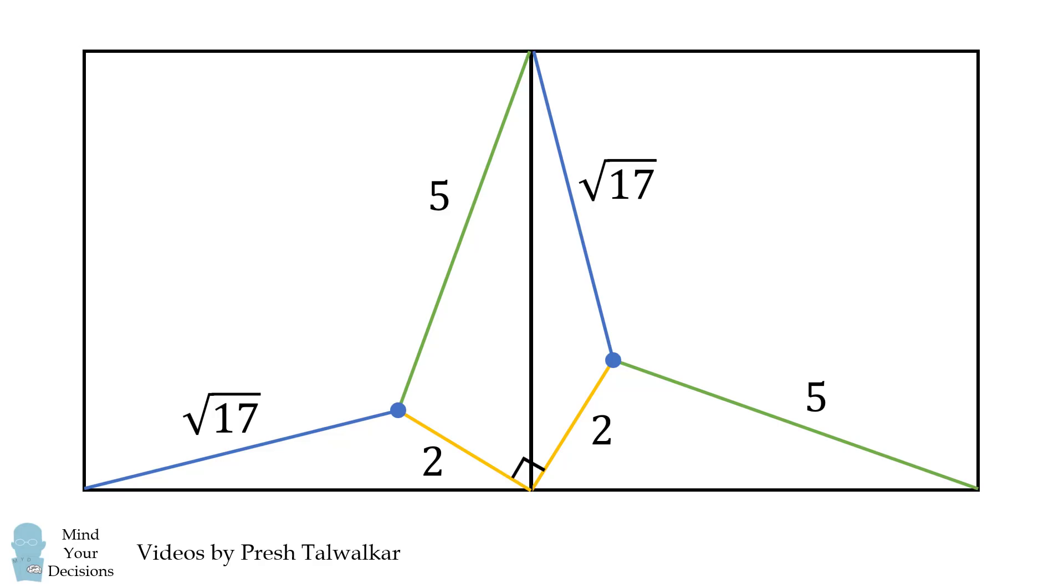Consequently, these two yellow lines are the legs of an isosceles right triangle. These angles will be equal to 45 degrees, and its hypotenuse will be 2 times the square root of 2.